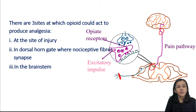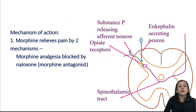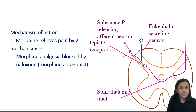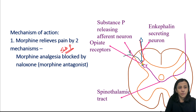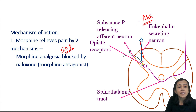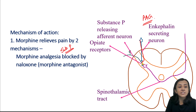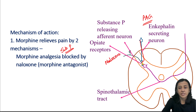Naloxone is a specific antagonist of opioids. Morphine relieves pain by two mechanisms: it binds with opioid receptors and decreases the release of substance P at the spinal level; and at the supraspinal level, it binds opioid receptors in the periaqueductal gray area and activates the descending inhibitory pathway, producing inhibition of primary afferent transmission in the dorsal horn. Morphine analgesia is blocked by naloxone.